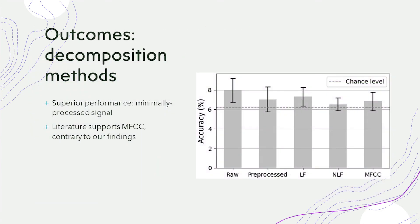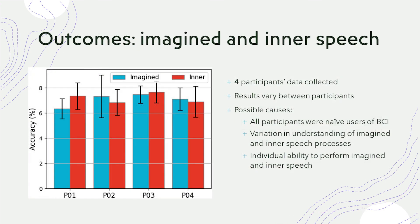Across all classifiers, it's found that superior performance is produced by the minimally processed EEG signal, which goes contrary to the studied literature supporting MFCC decomposition. The report discusses these results in depth. Data from four participants were successfully collected, and the interesting observation emerges that demonstrates no consistent support towards either imagined or inner speech between participants. Anticipated possible causes are naivety of the participants with BCI technologies, as well as the variation of personal understanding of the speech processes.